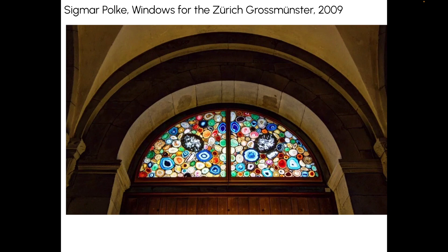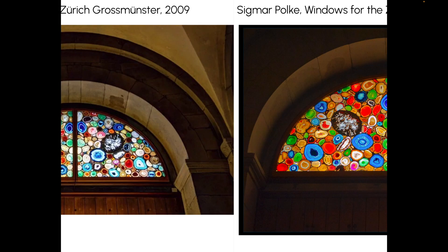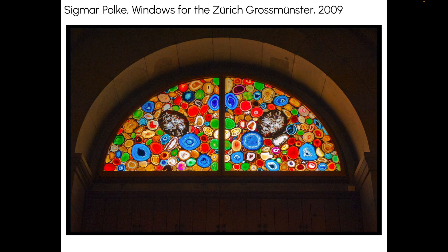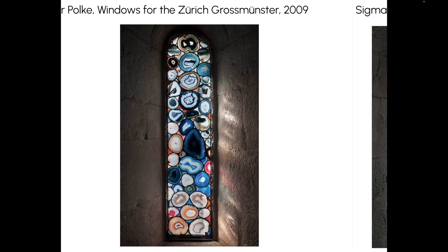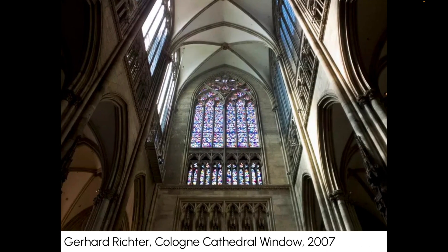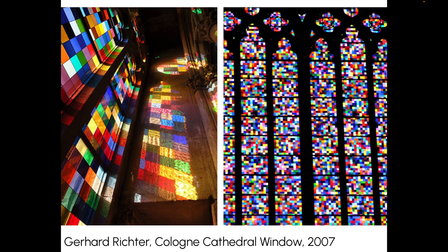Sigmar Polk designed windows for the Zurich Grossmünster in 2009. In these designs, he uses gate stones that have been artificially dyed and cut very thin to become the windows. Gerard Richter made windows for the Cologne Cathedral in 2007 — they're very high up, but up close they are made of little tiny squares.